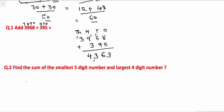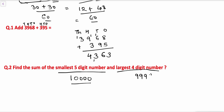Now let's take another question: find the sum of the smallest 5-digit number and the largest 4-digit number. As we all know, the smallest 5-digit number is 10000 and the largest 4-digit number is 9999. Now we'll do the addition: 10000 plus 9999.